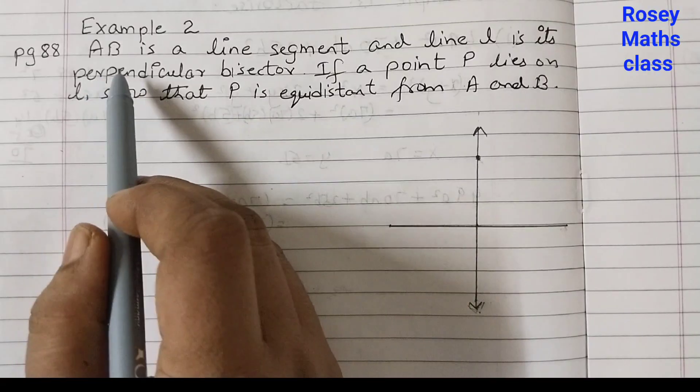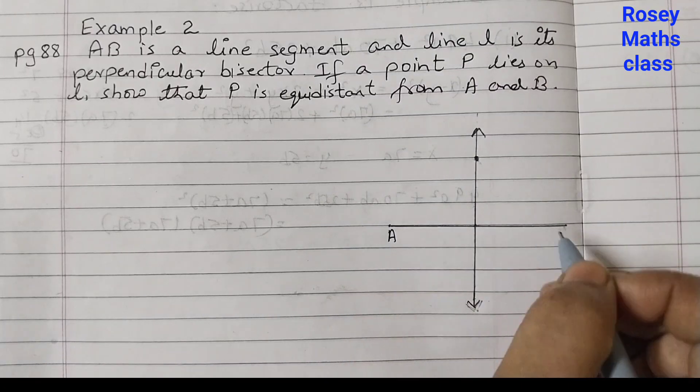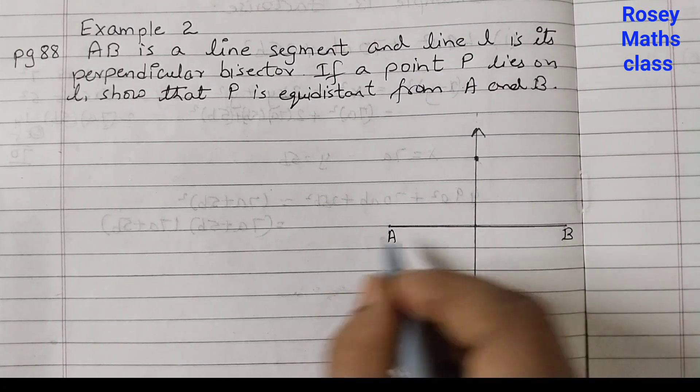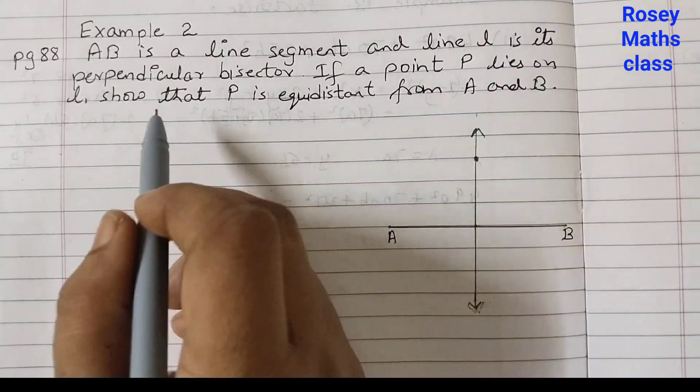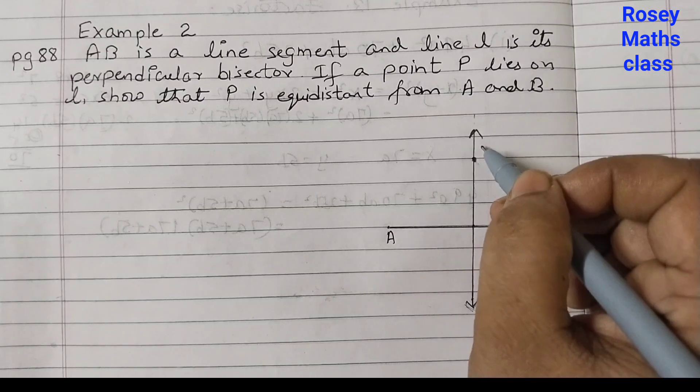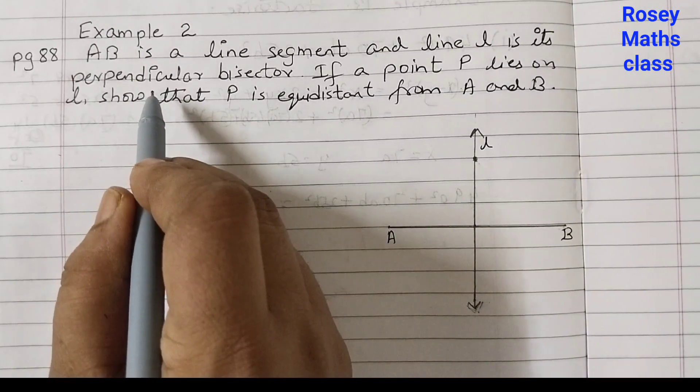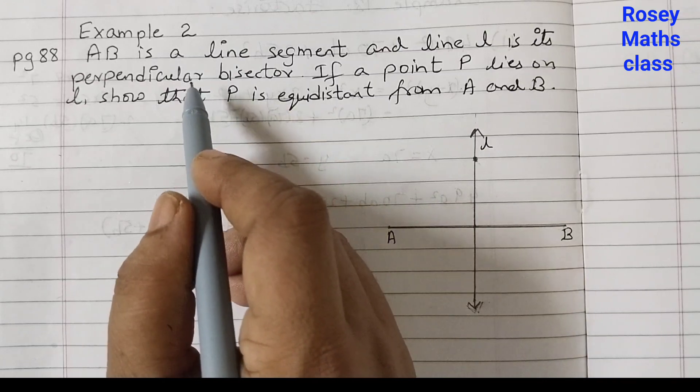AB is a line segment and line L is its perpendicular bisector. This is line L which is the perpendicular bisector. Perpendicular means 90 degrees.